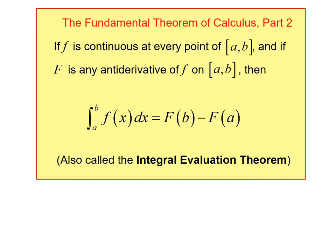Now we have Part 2 of the fundamental theorem. If our function is continuous on [a, b], and if capital F is the antiderivative of little f on [a, b], then the integral from a to b of f of x dx equals the antiderivative of f at b minus the antiderivative of f at a. This is also called the integral evaluation theorem, because it gives us our method of evaluating definite integrals. The good news is we already know this — we learned it in section 5.2.